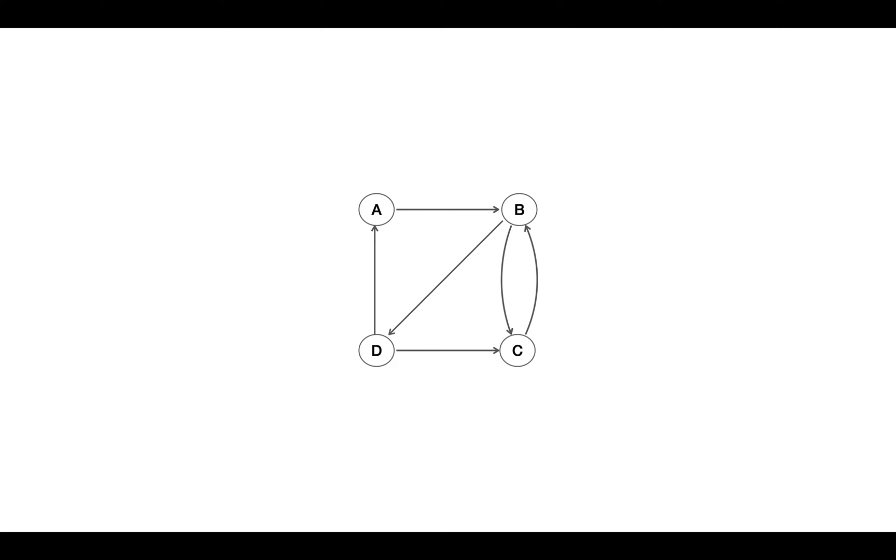Same with C and vertex D. So in this graph, component ABCD is a strongly connected component, or we can say this graph is a strongly connected graph.